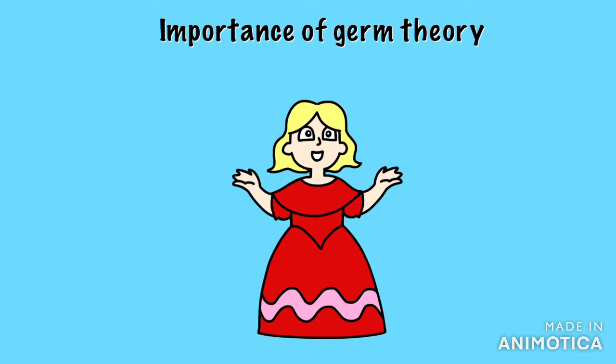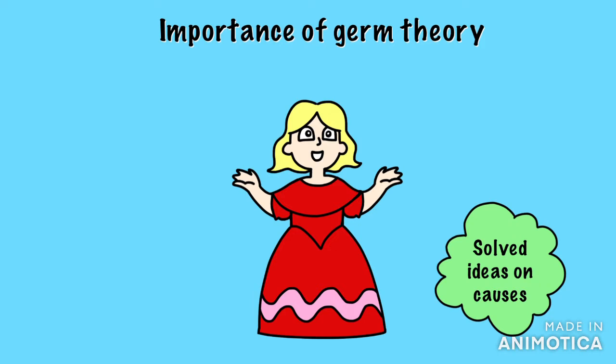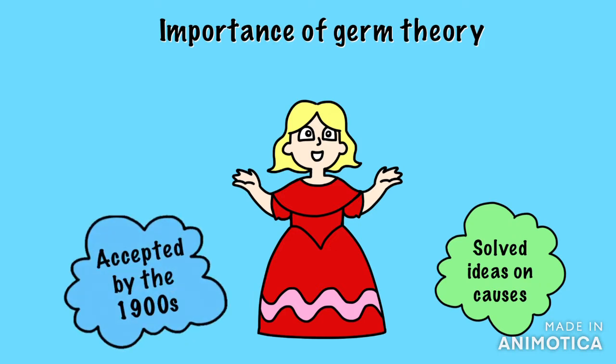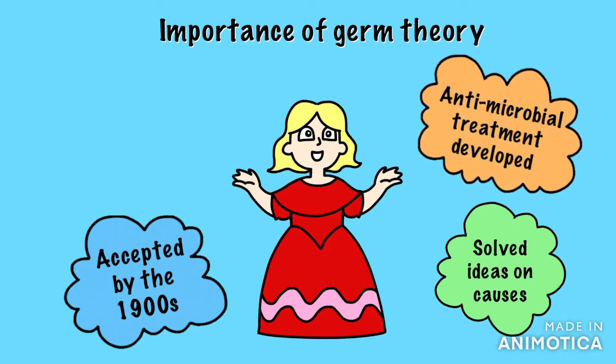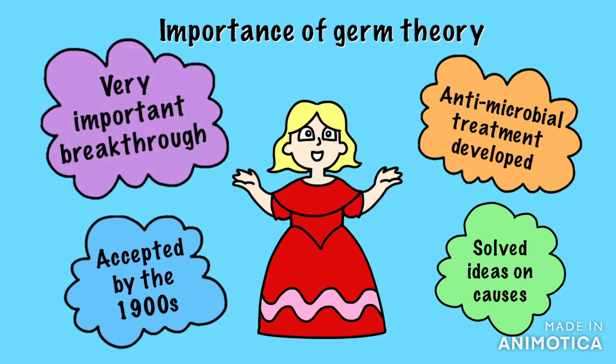The importance of germ theory: This theory solved the ideas on what caused disease. By the 20th century it was widely accepted and developed. Scientists now look at preventing disease-causing microbes through vaccines and antiseptics, and new treatments that can be developed with this new understanding. The theory affected almost everything in medicine – it was the most important medical breakthrough of the industrial period.